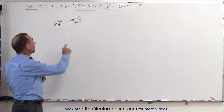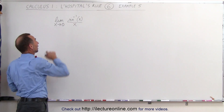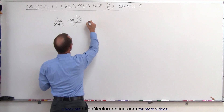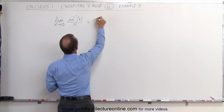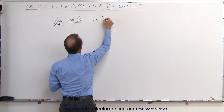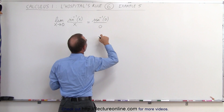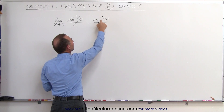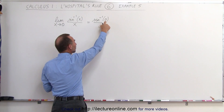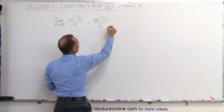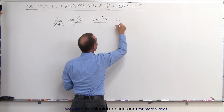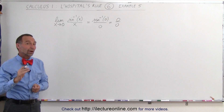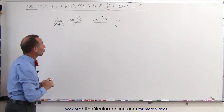Now, if we substitute x in, what do we get? We get the inverse sine of 0 divided by 0. When we take the inverse sine of 0, we get 0, so this becomes 0 divided by 0, which is an indeterminate form. That's why we use L'Hôpital's rule.